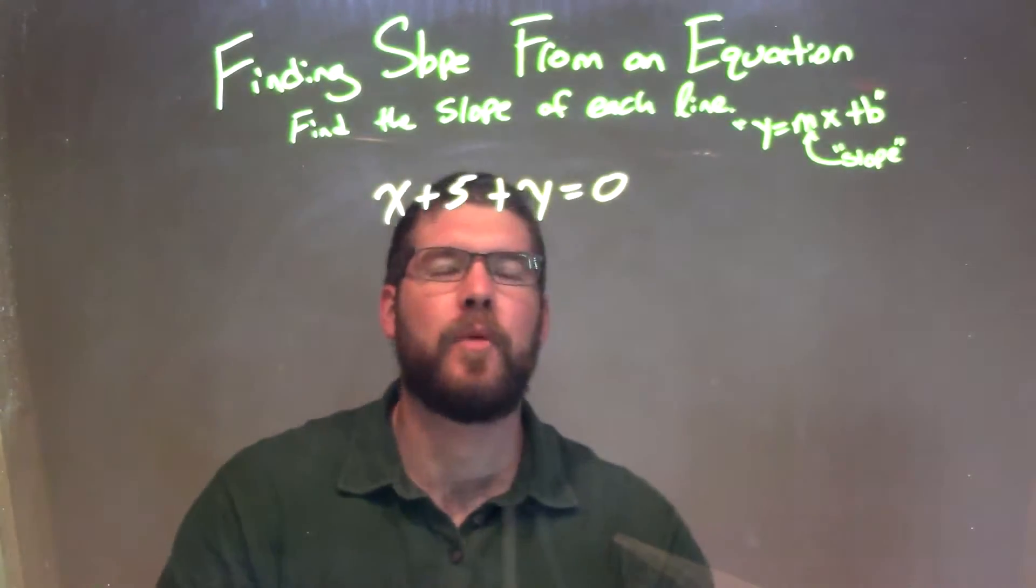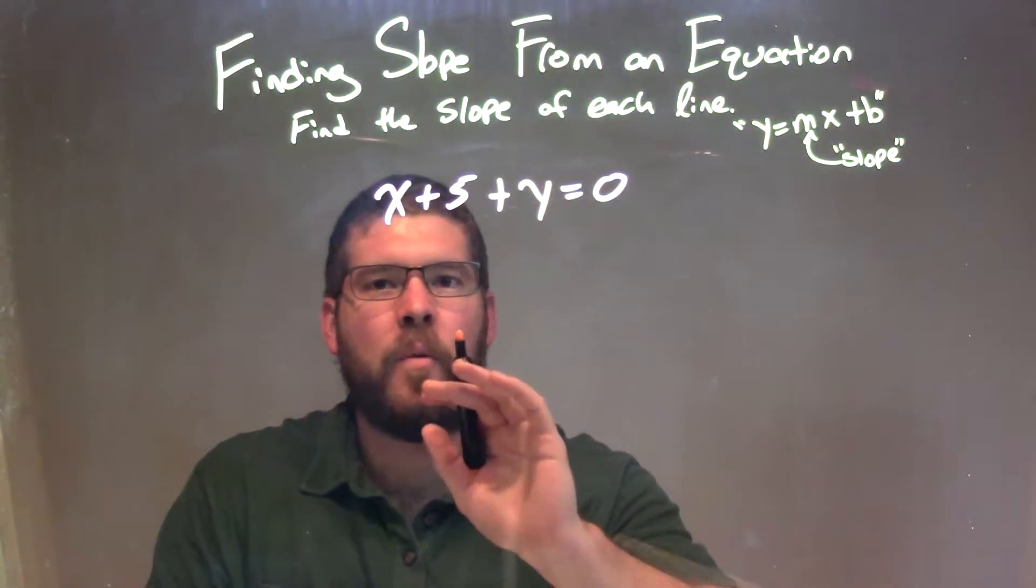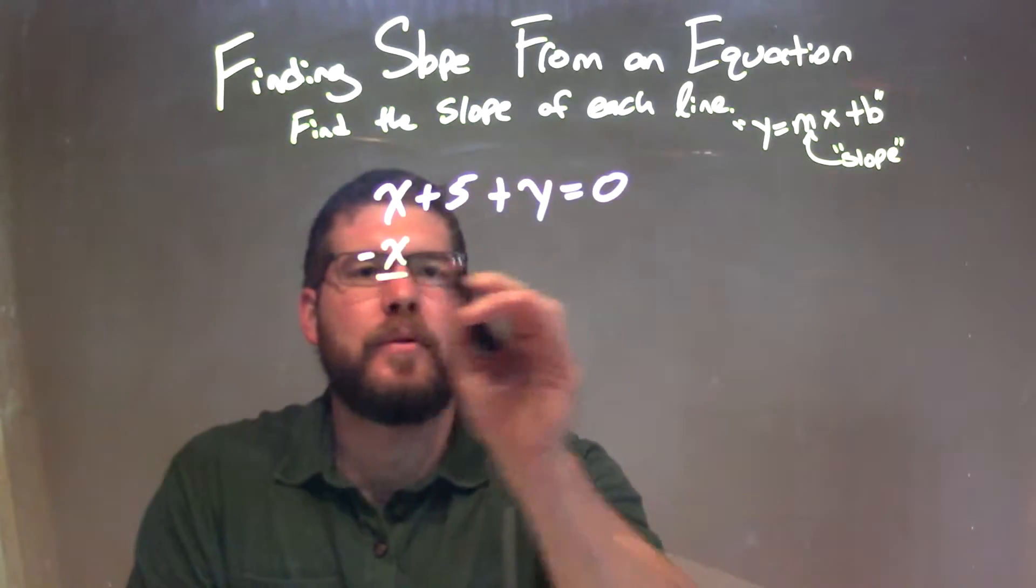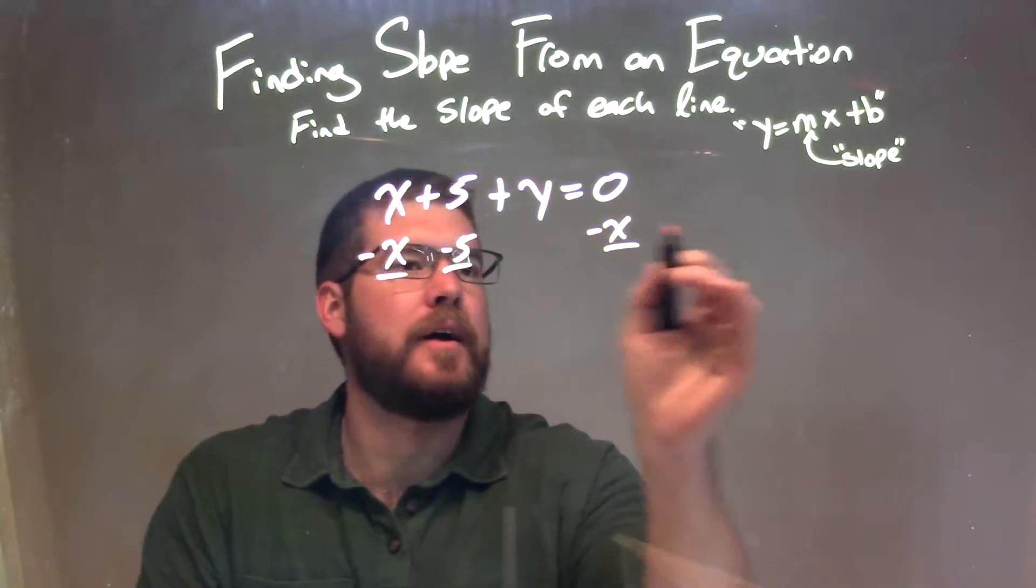So if x plus 5 plus y equals 0, I need to isolate the y. So to do that, I'm subtracting x to both sides, and I'm subtracting 5 to both sides.